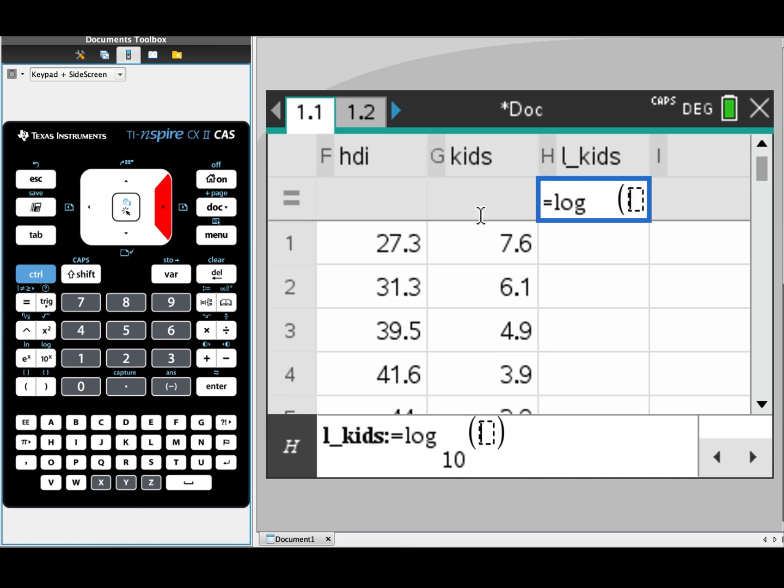And in the big brackets here, I typed the name of my column. In my case, I called it kids. Now you'll notice that when I finished typing the word, the word goes in bold, which basically means that the CAS knows what you're talking about. It knows what the variable is.